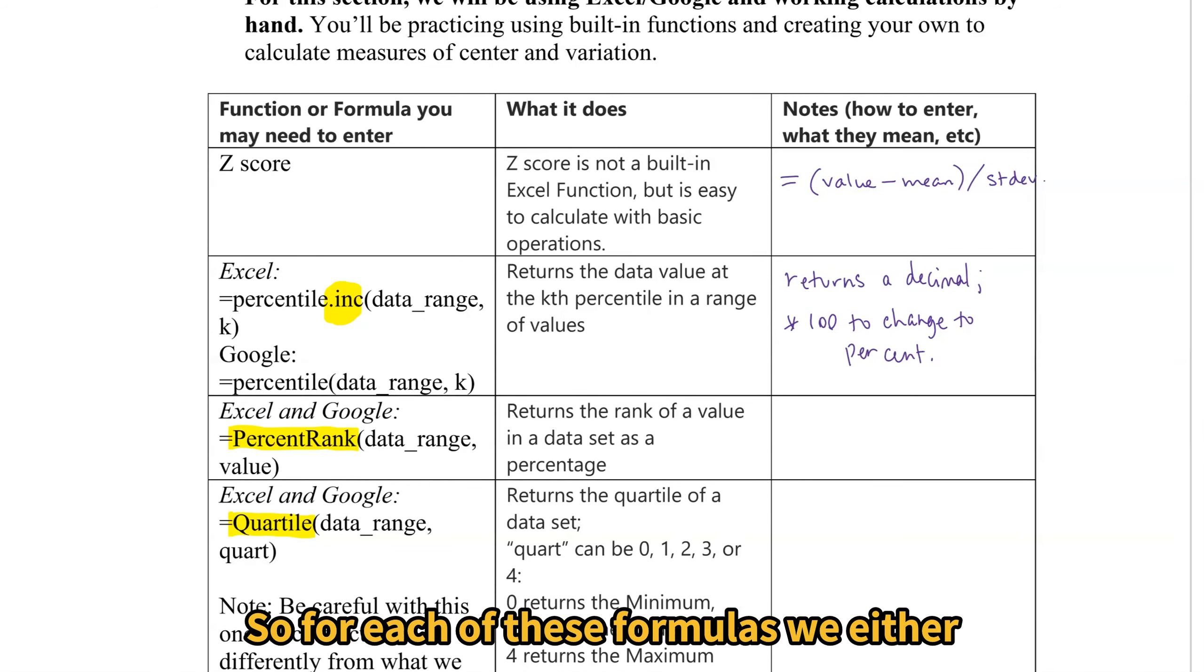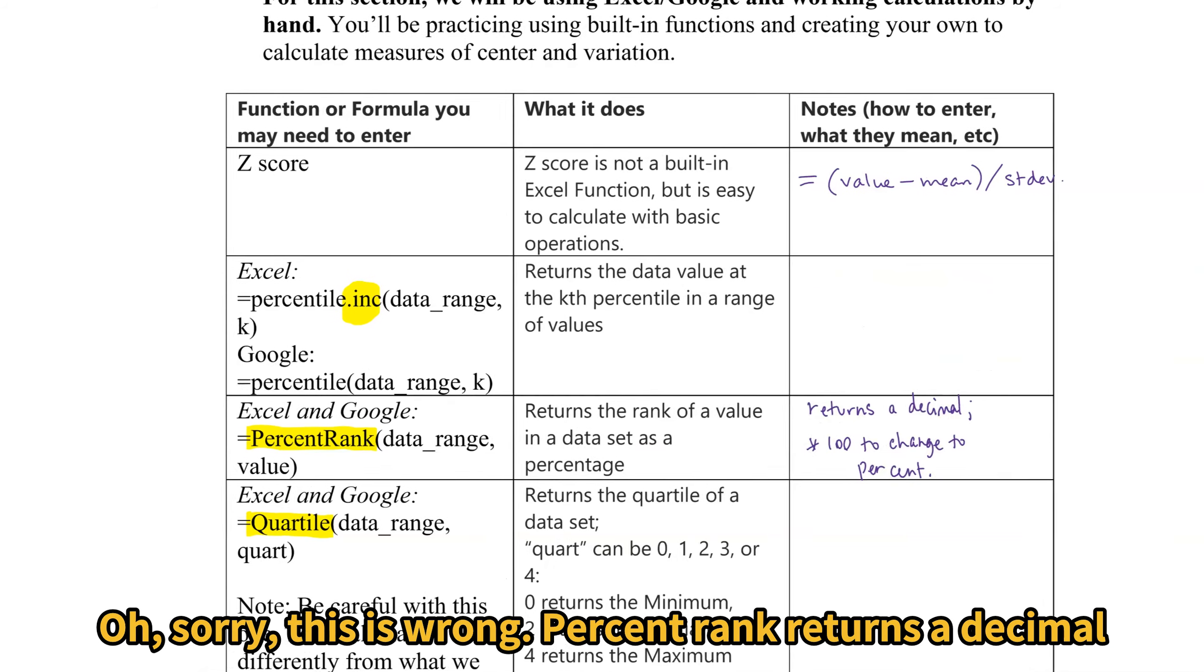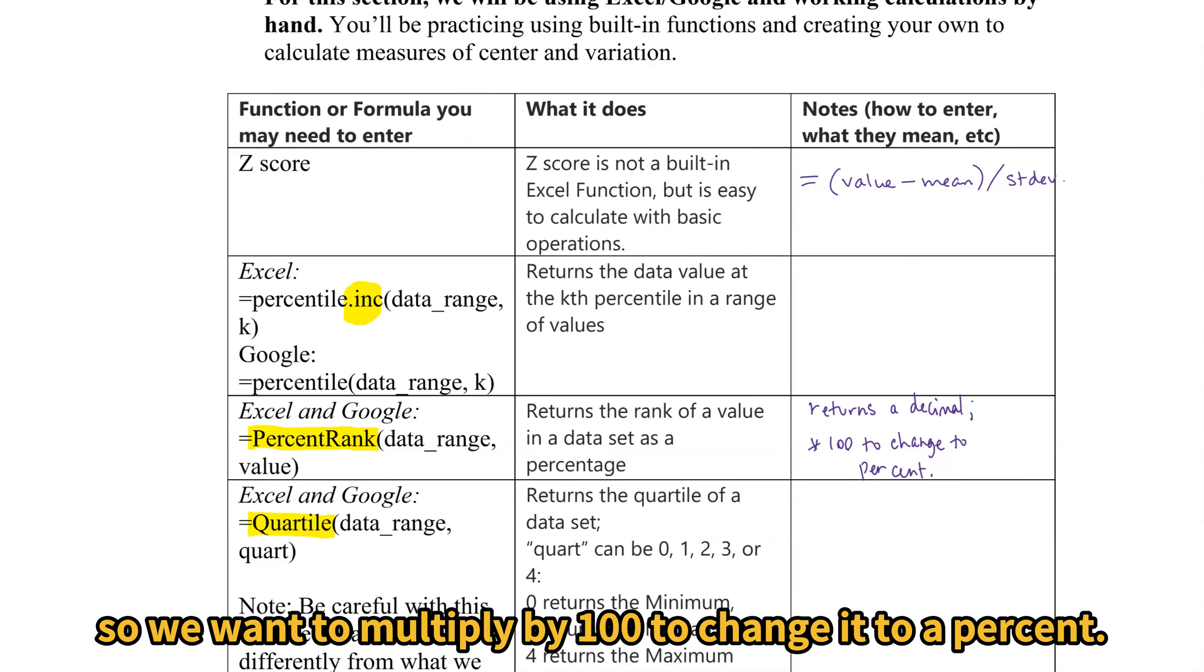So for each of these formulas, we either, oh, sorry, this is wrong. PERCENTRANK returns a decimal. So we want to multiply by 100 to change it to a percent.